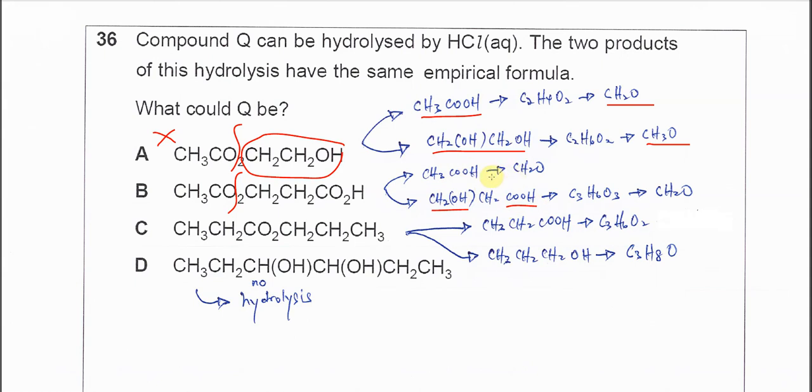The empirical formula for ethanoic acid, as we already found, is CH2O. For this compound, CH2OH-CH2COOH or 3-hydroxypropanoic acid.